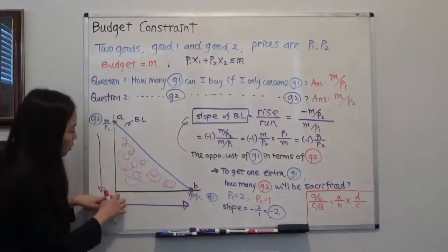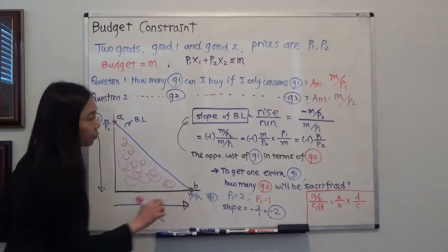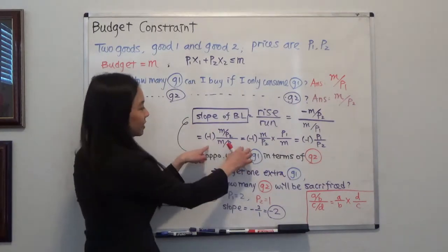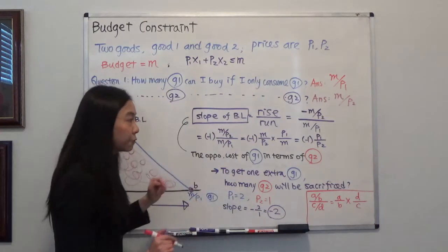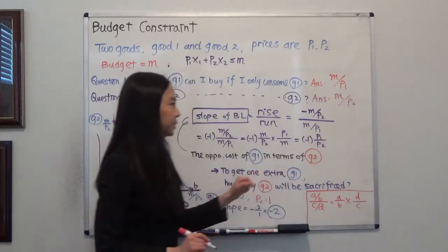What about the run? We're going to the right. So the run is M over P1 right here. And after I manipulate the parameter, I will find that the answer is actually negative P1 over P2.